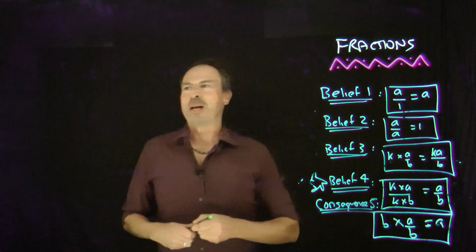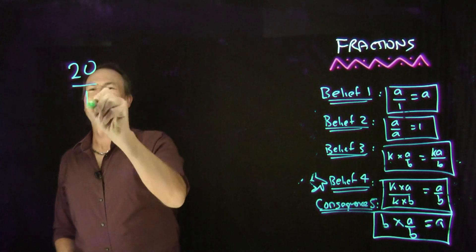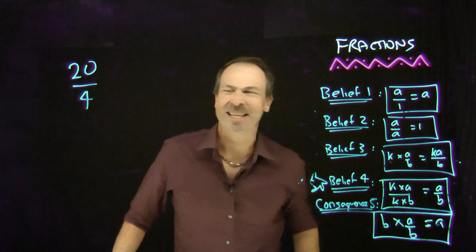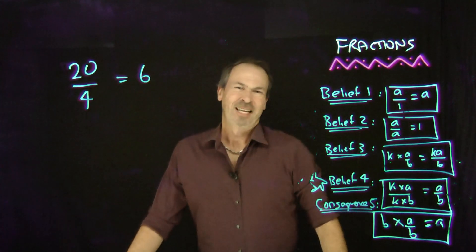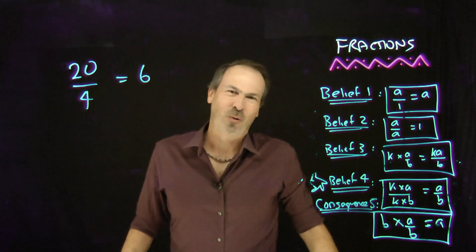Okay, suppose I'm trying to work out, say, 20 divided by 4, but I'm not really sure what the answer is. I just kind of make a guess. I only guess the answer is 6. Is there any kind of check I can do to see if I'm correct or not?